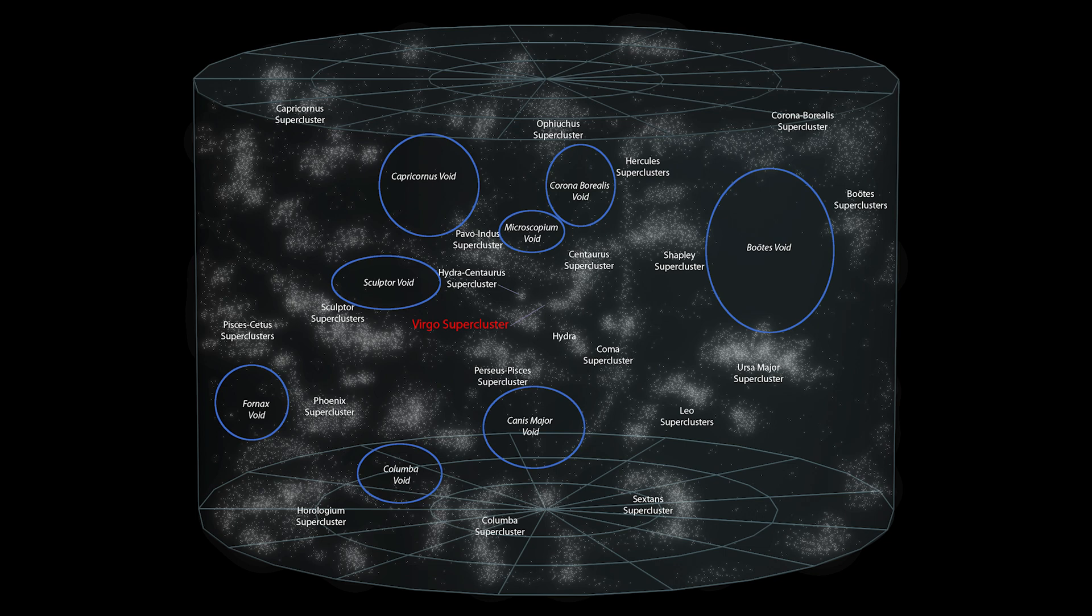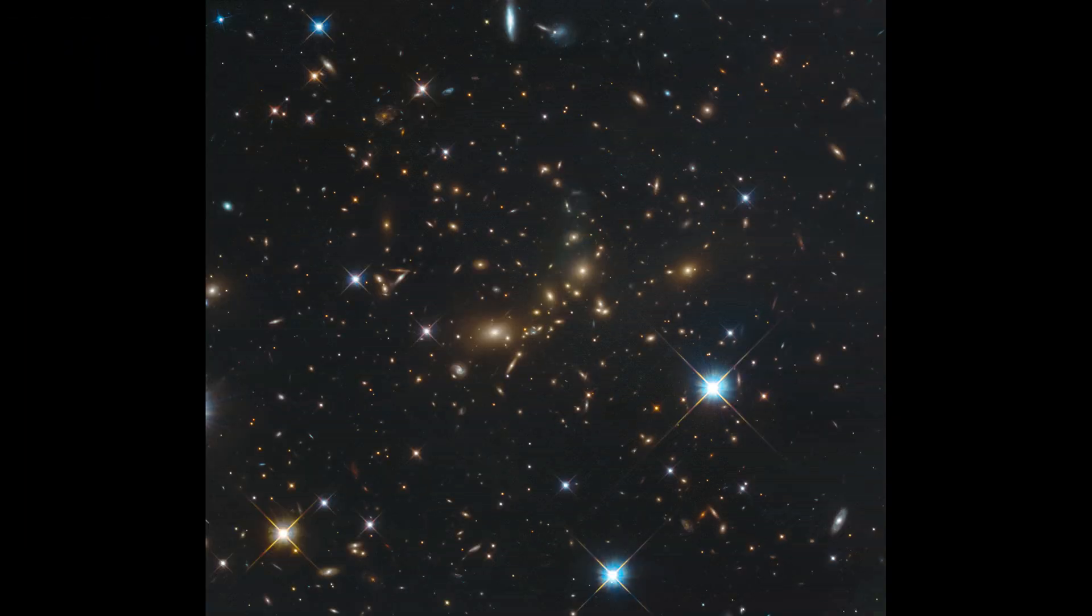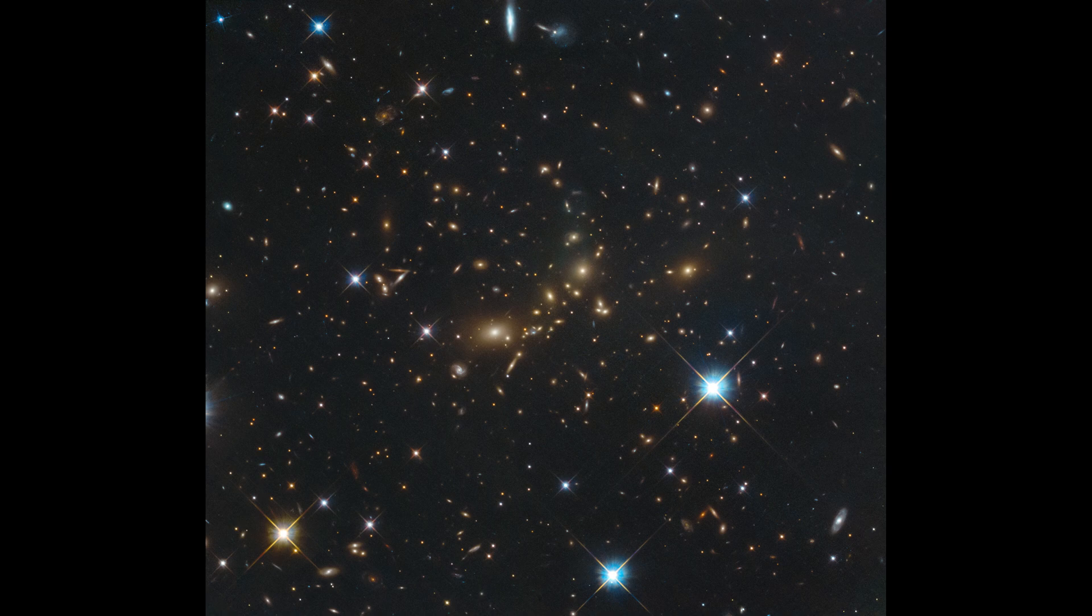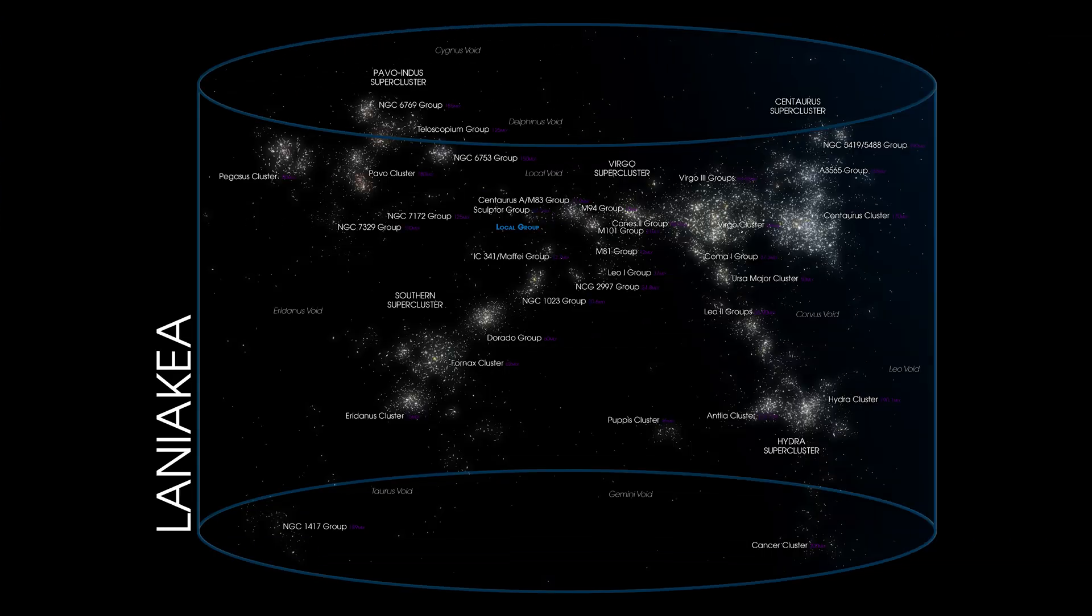we come to the largest known structures in the observable universe. Superclusters. Superclusters typically contain 3 to 10 galaxy clusters and can span hundreds of millions to billions of light years. We reside within the Laniakea supercluster, which stretches 520 million light years and is home to over 100,000 galaxies.